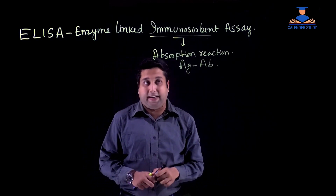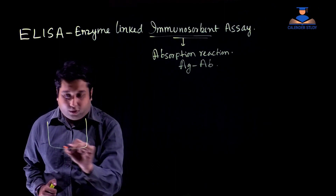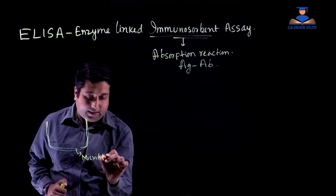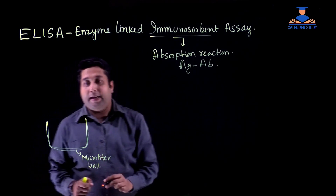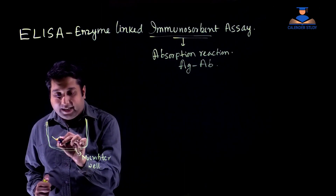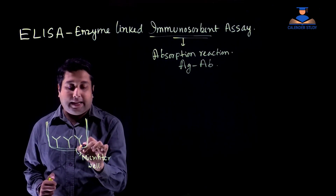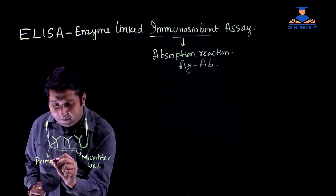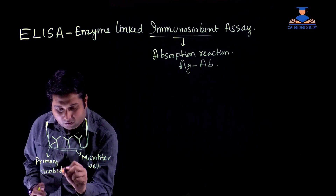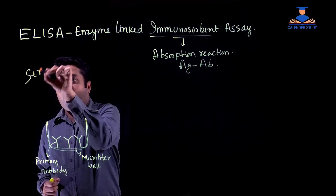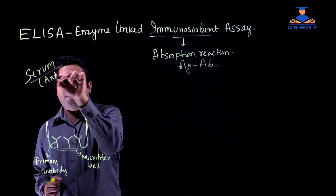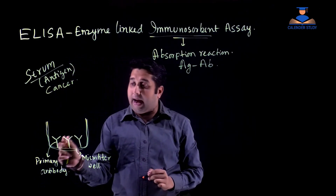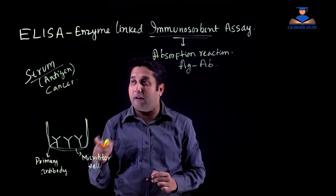In this procedure, first of all a microtiter well is taken. In this microtiter well, antibodies specific to the antigen we want to detect are embedded — these specific antibodies are known as the primary antibody. For example, if we want to detect a cancer antigen, we add antibodies specific to that cancer antigen into the microtiter well.